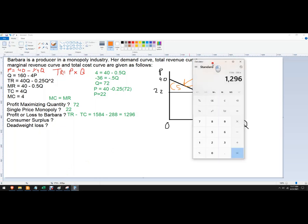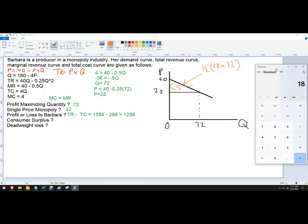Let's get that out of the way. 18 times 72, and then times, let me make sure I didn't have something in the calculator there. 18 times 72, times 0.5. 648 is the consumer surplus, so 648.